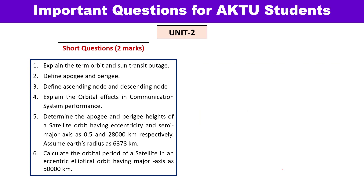In Unit 2, you are studying satellite orbital parameters, and there are various orbital parameters to know. You may also get numericals based on them. You need to calculate the orbital time period, apogee distance, perigee distance, apogee height, and perigee height — and remember there is a difference between apogee distance and apogee height. Sometimes you need to calculate eccentricity and the semi-major axis. The major axis is 2A, so the semi-major axis is A, and the semi-minor axis is B.